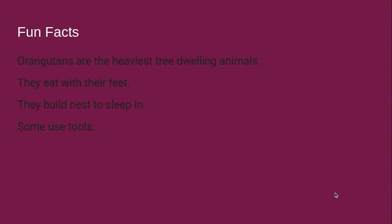Fun facts: orangutans are the heaviest tree-dwelling animals, meaning they live in trees. They eat fruit with their feet, which is odd because you'd assume that since they're closely related to humans they'd eat with their hands. They also build nests to sleep in — you'd think of a bird building a nest, but orangutans do it too. And they use tools: for example, when there are ants inside a log with a little hole, they grab a stick, push it into the log, pull it out, and eat the ants off of it.